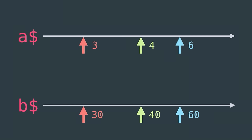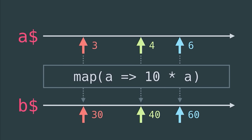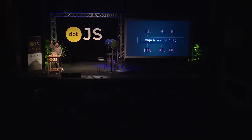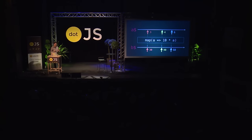Event stream A has the events 3, 4, and 6. And B was created from A using a certain formula — the events of B are the events of A mapped to 10 times A. If you know JavaScript arrays, you've probably seen map on arrays, and it's the same idea. Given the array on the top and a function, you get the array on the bottom, and this is an immutable operation — we're not changing the top array. It's the same thing here with event streams. We have the top event stream A which we map, and we get a new event stream B, but A's stream just stayed untouched.